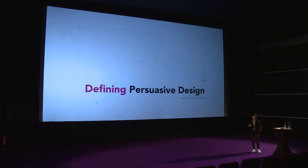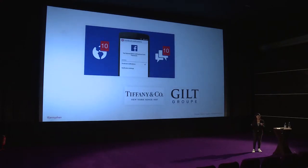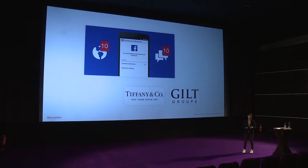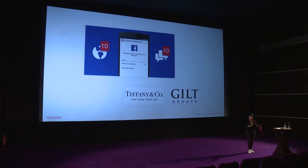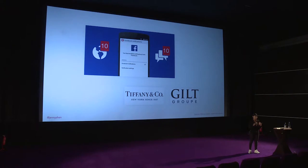So first, if you want to define persuasive design, it's actually not as uncommon as you think. For example, Facebook's notification color is red for a reason. Red, in color theory, signals warning and grabs attention. It makes the user think something is very important and urgent. So when you get a notification in red, you're going to want to check it because you think it might be something important or urgent.